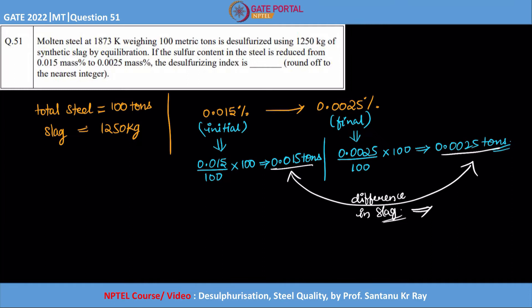So for that we can easily calculate this. So sulfur in slag is nothing but 0.015 minus 0.0025, so this would be equal to 0.0125, correct, yes 0.0125 tons.